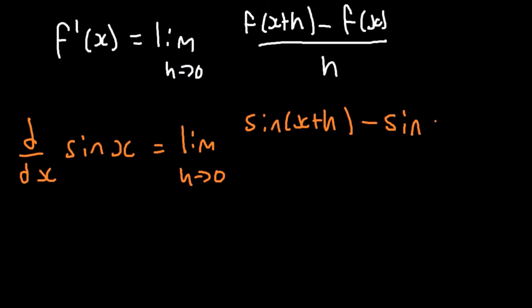The first thing to note is the compound angle, which is x plus h. So let's apply the sine compound angle formula to produce sine x plus h equals sine of x times cosine of h plus sine of h times cosine of x.